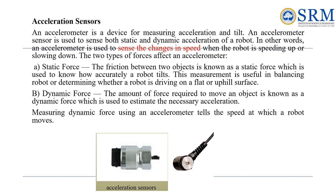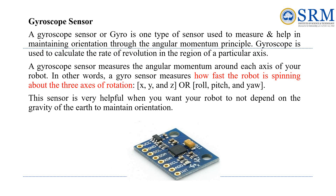An accelerometer measures a robot's acceleration and tilt, sensing both when the robot speeds up or slows down. It deals with two types of forces: static force, which helps a robot understand how it is tilted — useful for balancing or knowing if it is on flat ground or an incline — and dynamic force, which measures the force needed for the robot to move and can indicate how fast the robot is going.